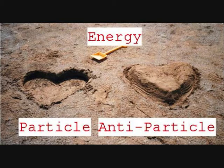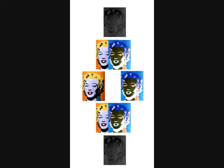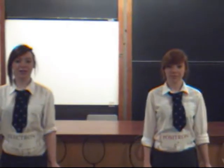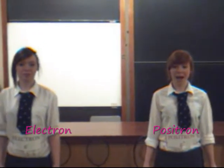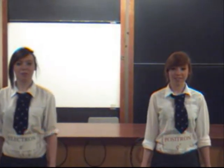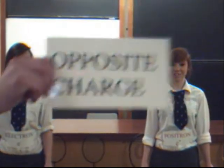Anti-matter is like matter, but opposite in some ways. You could say anti-matter is like the mirror image of matter. I am an electron. I am a positron. We have the same mass, but opposite charge.